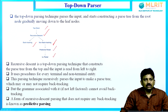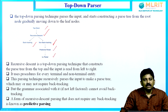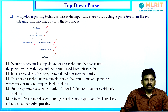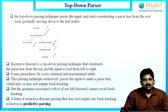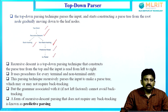Recursive descent is a top-down parser. This parser tries to construct a parse tree from the top to the leaf nodes, that is from top to bottom, while parsing the string from left to right. Recursive descent parser uses a procedure for every terminal and non-terminal entity. This parsing technique recursively parses the input to make a parse tree, which may or may not require backtracking.